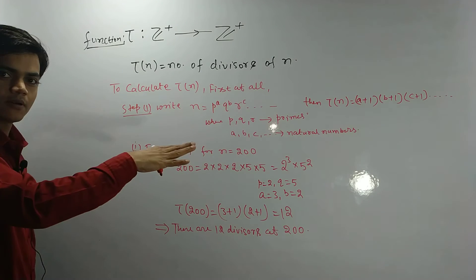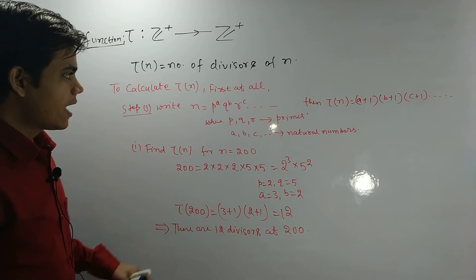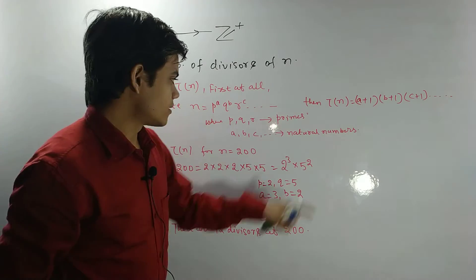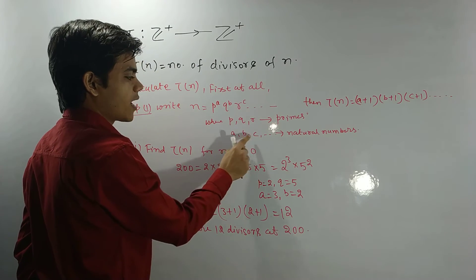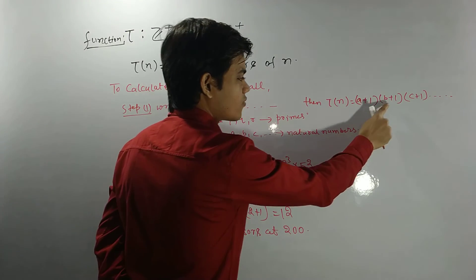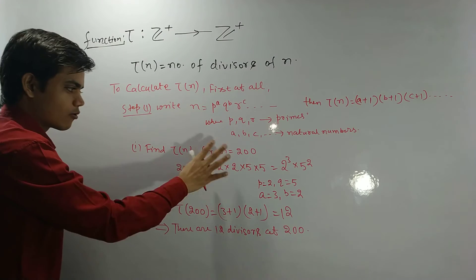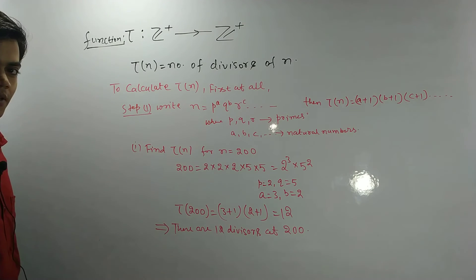Okay, so this is how you can calculate Tau(n). First of all, write n as the product of prime powers. Okay, and thereafter, this is the formula. These are the powers of primes a, b, and c, then a plus 1 times b plus 1 times c plus 1. The corresponding example is very clear here at this moment.